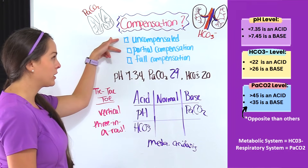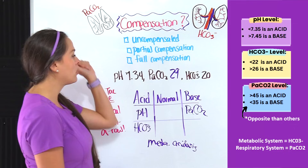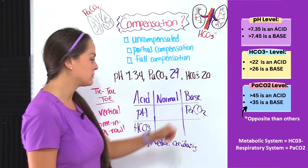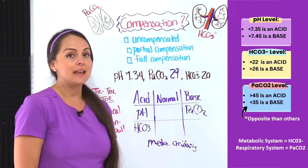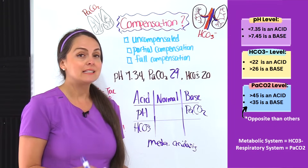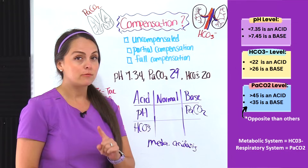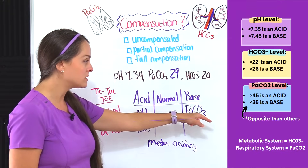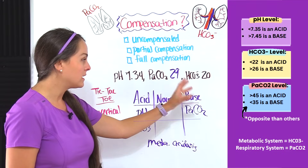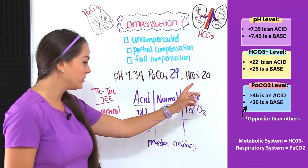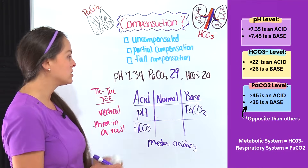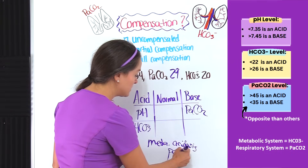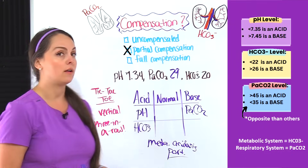However, I'm trying to decide between uncompensated or partial compensated. Let's take a further look at the system not causing our imbalance — the respiratory system. I notice that now it doesn't fall in normal range: it's 29, which is less than 35. Because of that, this system has thrown itself into an alkalotic, hence basic, value in order to try to fix the blood pH. So it's partially trying to compensate, but hasn't done it fully yet because our pH is still abnormal.